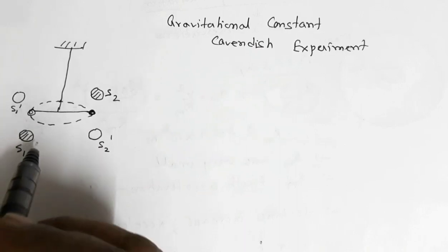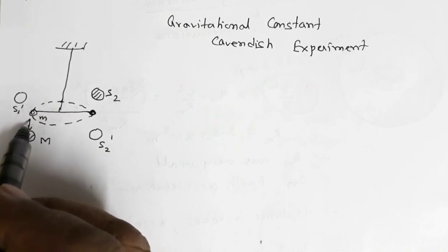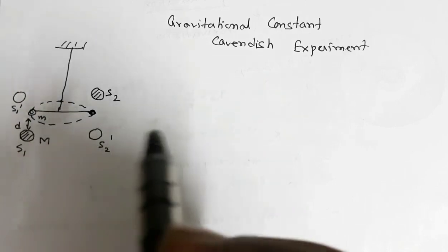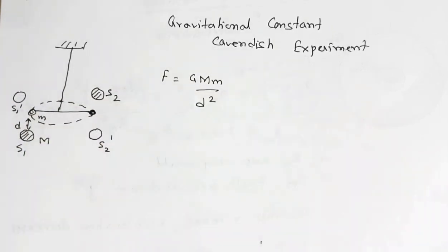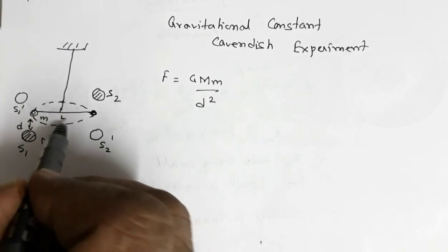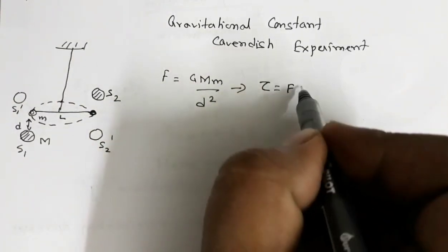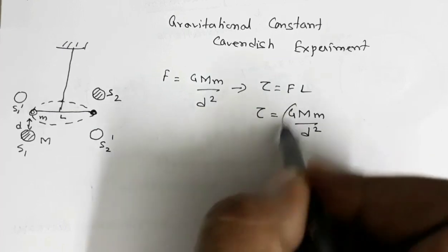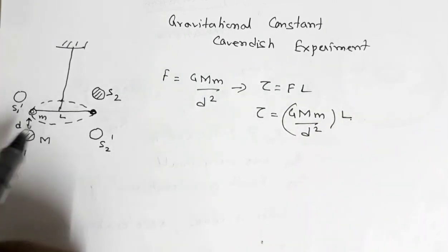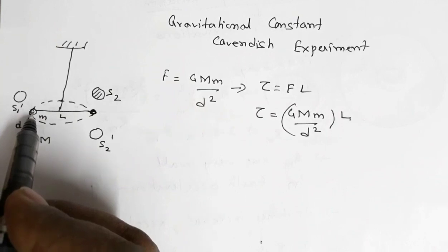If M is the mass of the large lead sphere, m is the mass of the small lead sphere, and d is the distance of separation, then the force of gravitation is F = G·M·m / d². If L is the length of the rod, then the torque produced is τ = F × L = G·M·m·L / d². This torque causes the rod and the system to rotate.